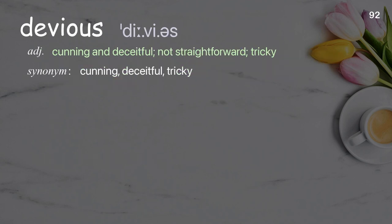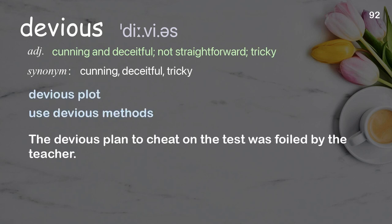Devious: cunning and deceitful, not straightforward, tricky. Examples: devious plot, use devious methods. The devious plan to cheat on the test was foiled by the teacher.